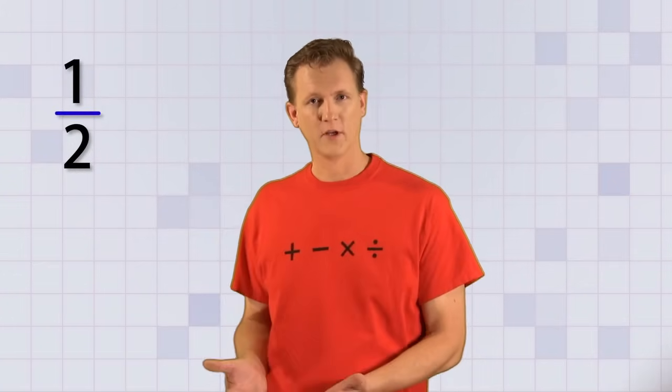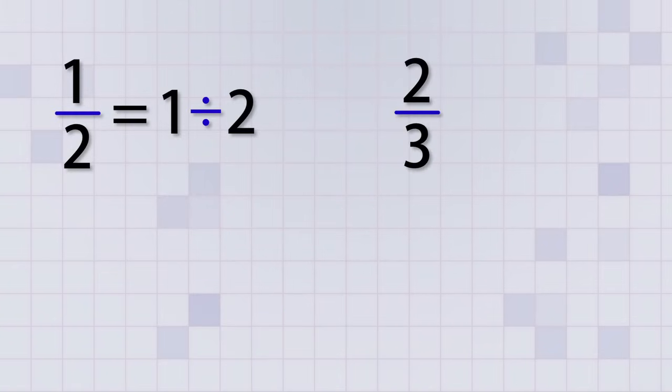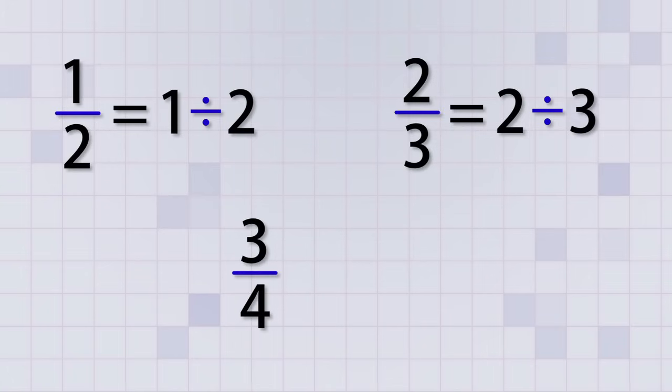For example, 1 half or 1 over 2 is really just 1 divided by 2. The fraction 2 thirds or 2 over 3 really means 2 divided by 3. And the fraction 3 fourths or 3 over 4 really means 3 divided by 4.